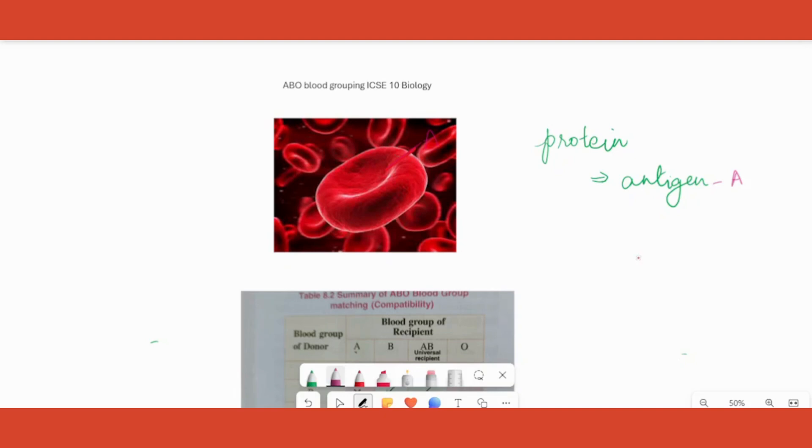Let's say a person has antigen A present on the surface of the RBC, then the blood group is A. If instead of A, B is present, then that person's blood group is B. So depending on the antigen on the surface of RBC, we give names to the blood group. If both A and B are present, then that person's blood group will be AB. If none of it is present, both are absent, then the person's blood group will be O.